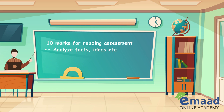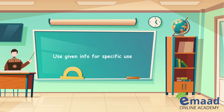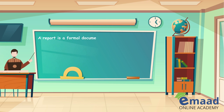There are 10 marks for reading assessment — how well you read the text that was given to you, how you analyze the facts and ideas, separate them, and use this given information for specific use. These 10 marks are given based on the content that you use, and you have to derive your content from the given reading text. Your reading skill will also be analyzed.